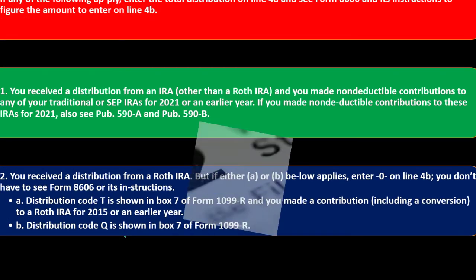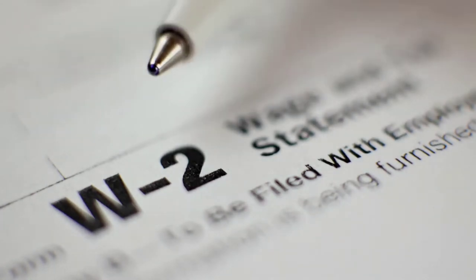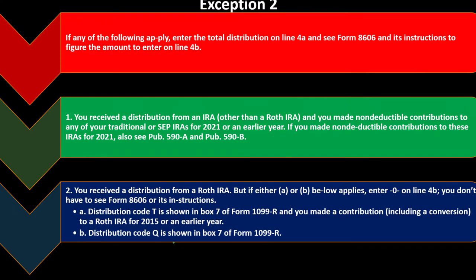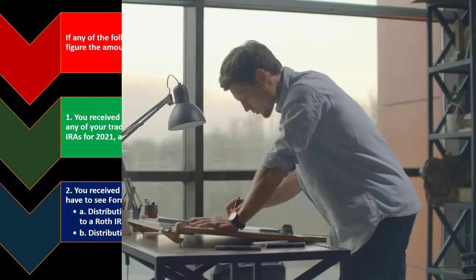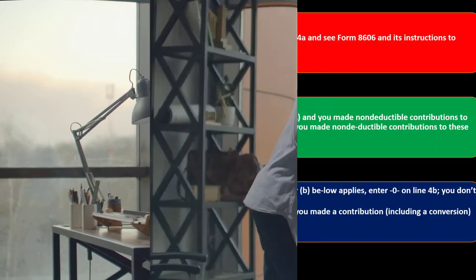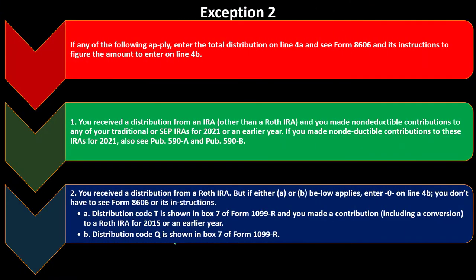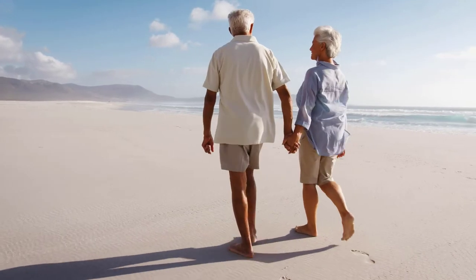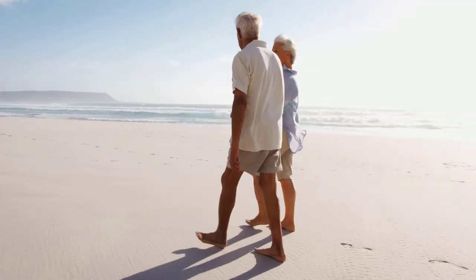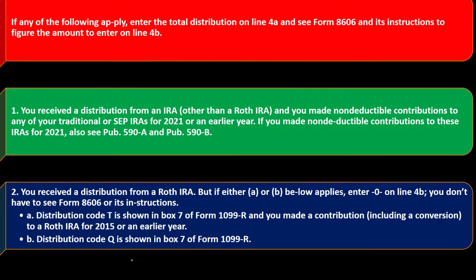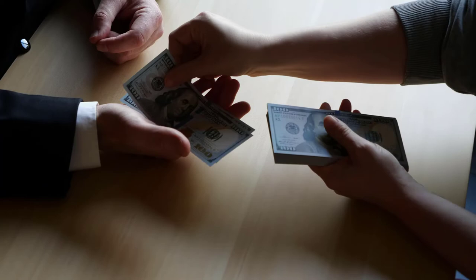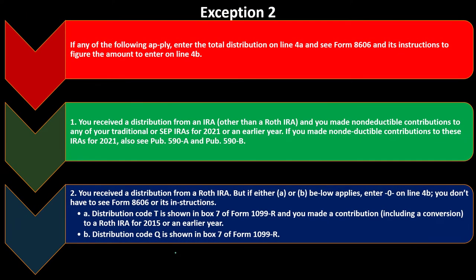You get a benefit upfront, and then when you pull the money out at retirement, that's when you pay the taxes — you get this huge deferral, which is usually good. However, you might prefer the reverse scenario: pay the taxes now so that when you pull the money out, you don't have to pay taxes then. That's the Roth IRA scenario — the reverse of the traditional IRA approach.